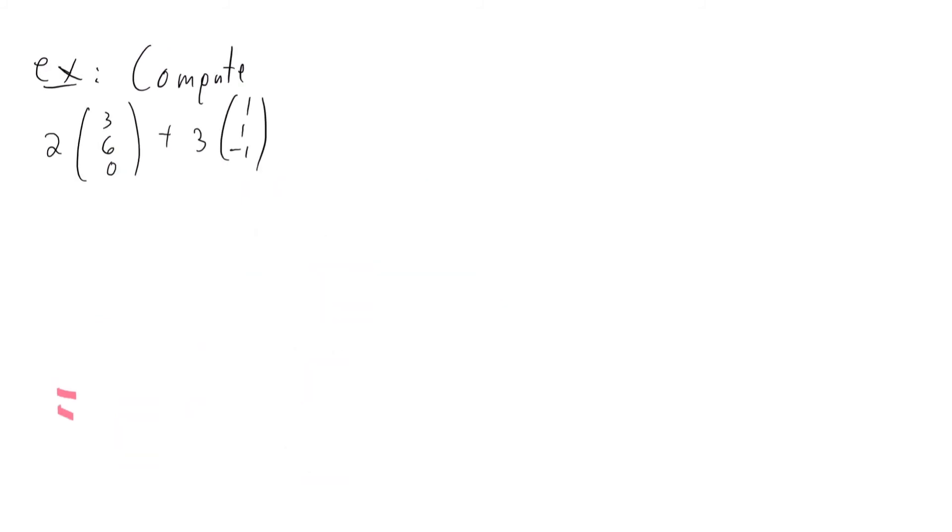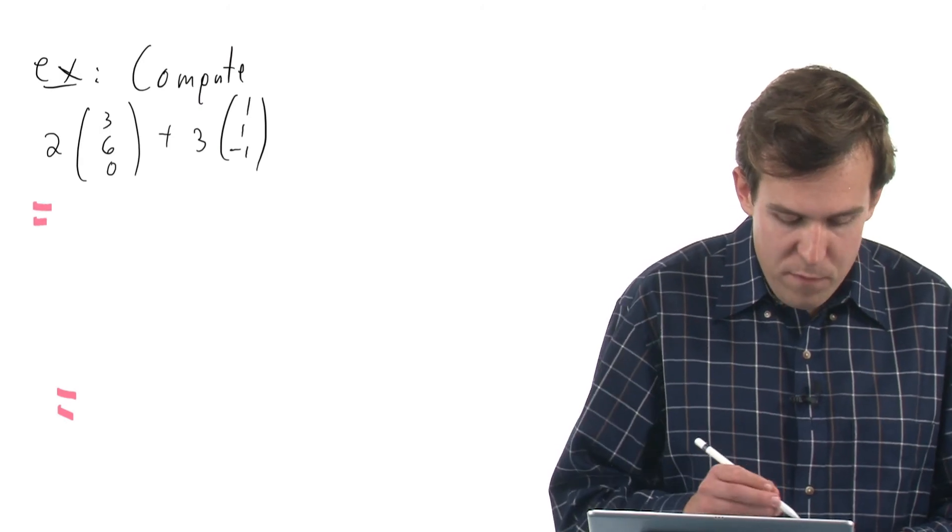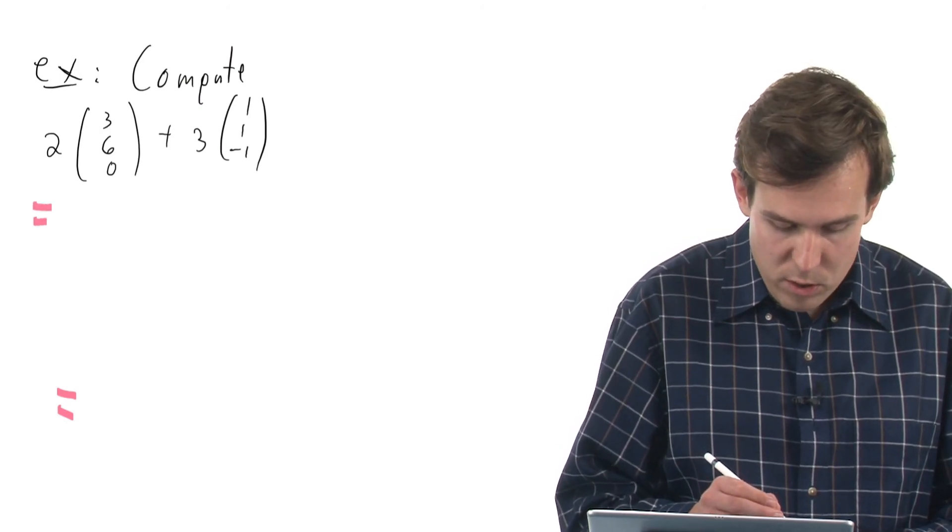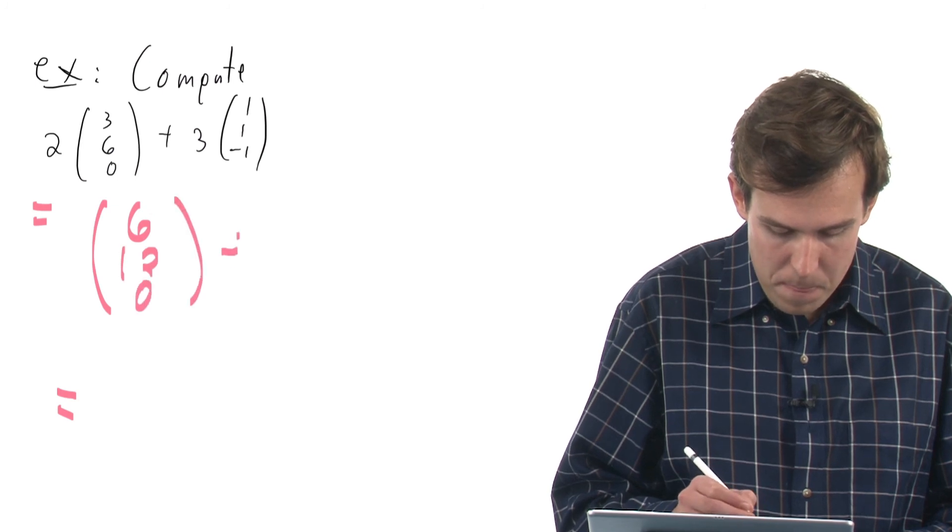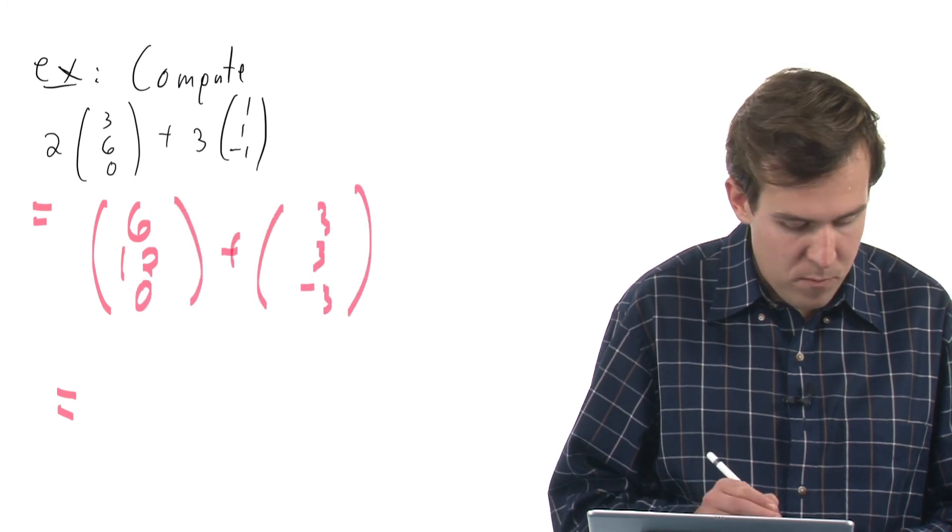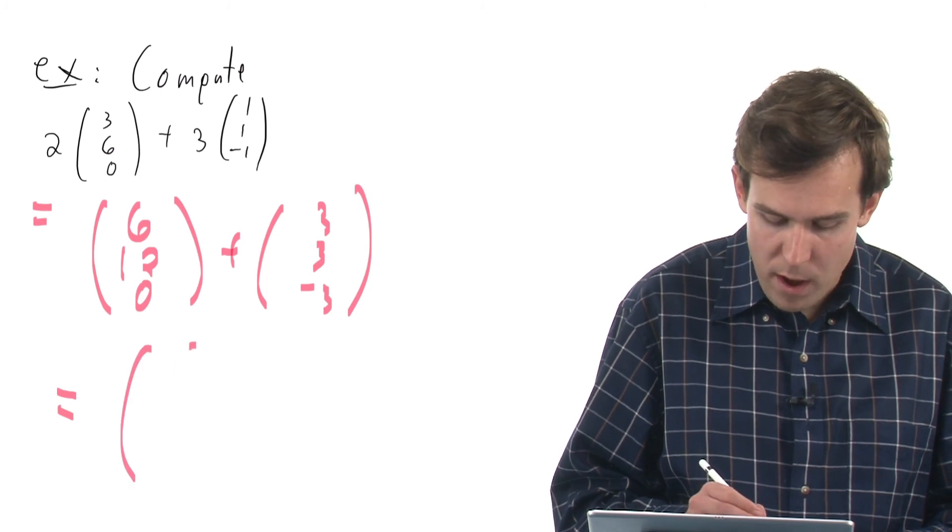Here's an example with vectors where again, I will first apply the scalar multiplication to get (6, 12, 0) and (3, 3, -3).